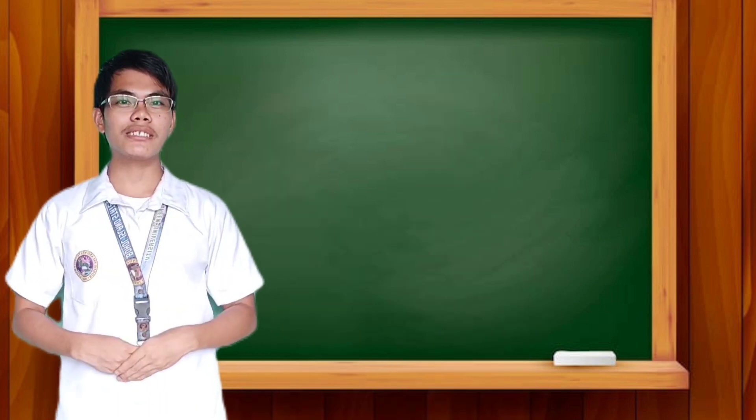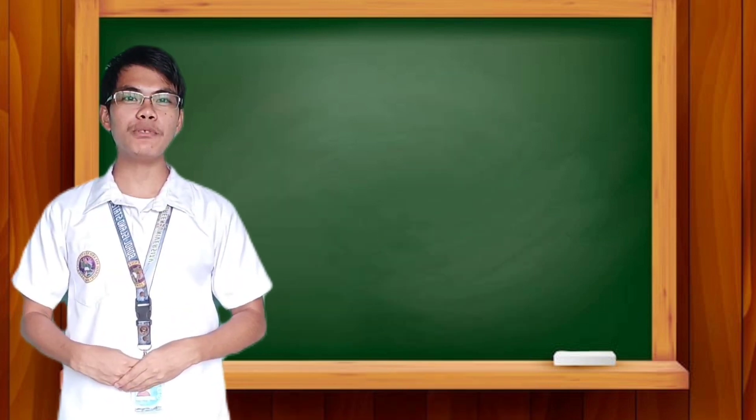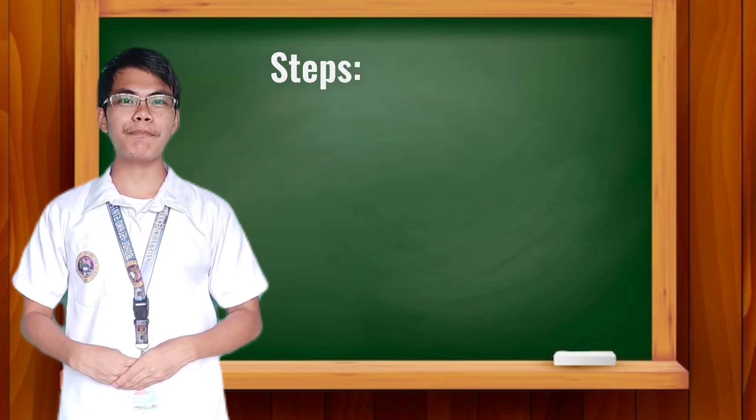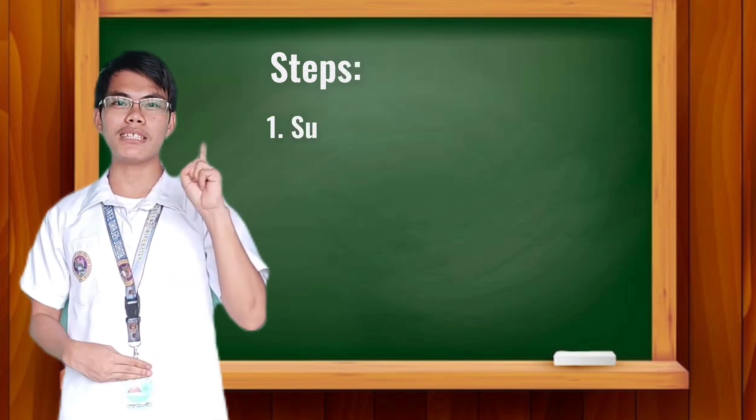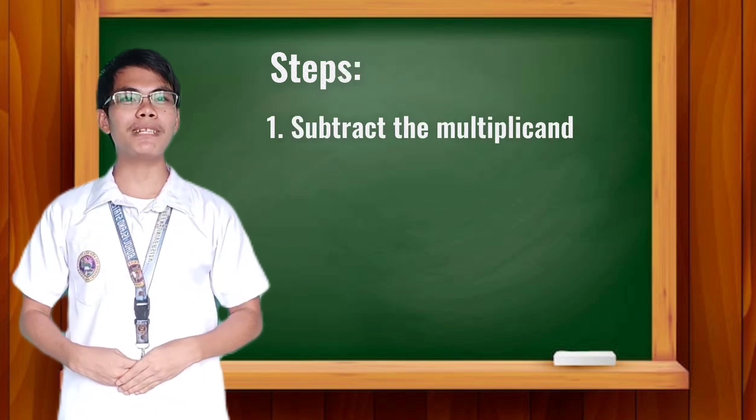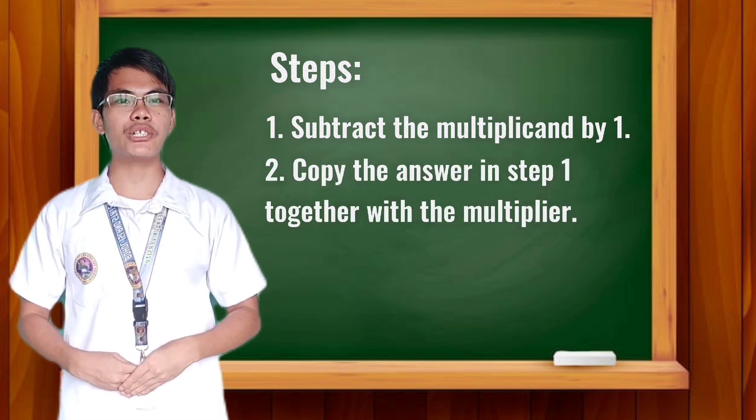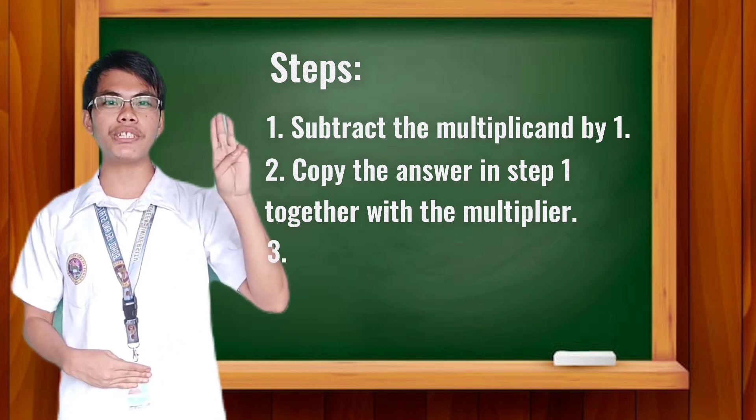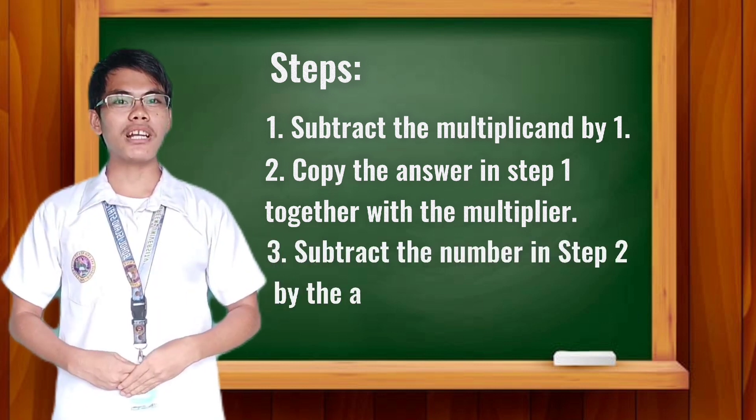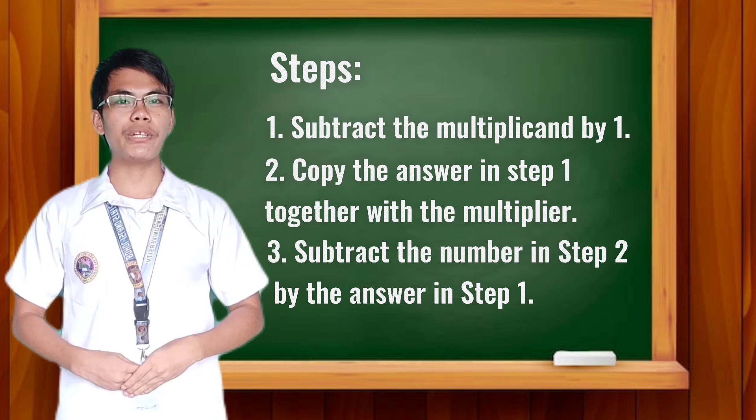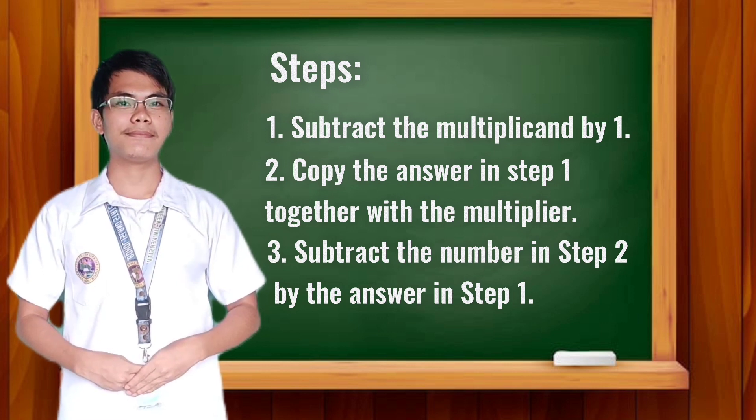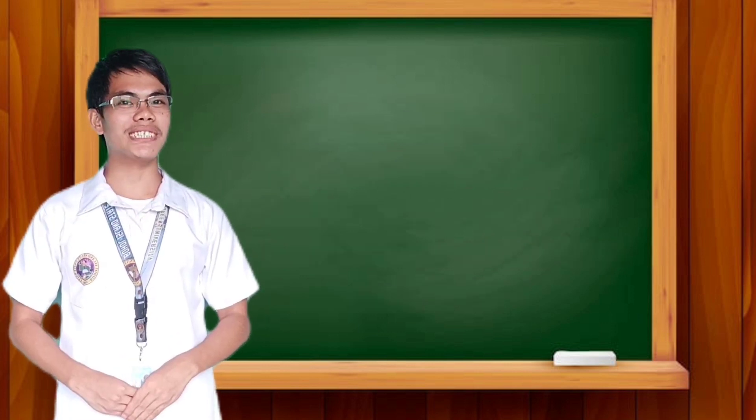Before we start, always remember the basic and simple steps. Subtract, copy, and subtract. Step 1: Subtract. Subtract the multiplicand by 1. Step 2: Copy. Copy the answer in step 1 together with the multiplier. Step 3: Subtract. Subtract the answer in step 2 with the answer in step 1.